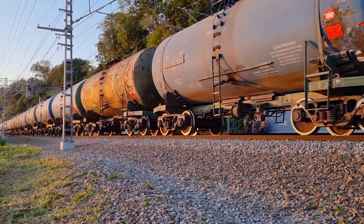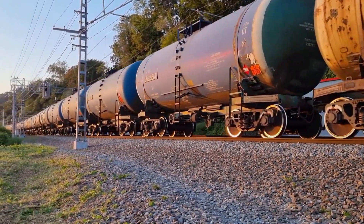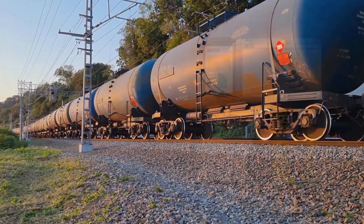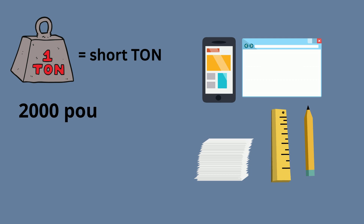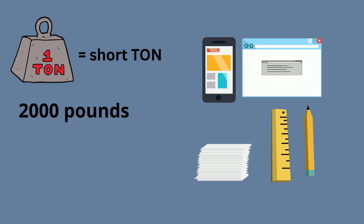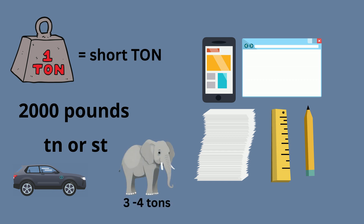Now, what do you do if you have something heavy like a car or a train? You could use what's called a short ton, which is equal to 2,000 pounds. It uses the abbreviation TN or ST. A small car weighs roughly one ton, and an adult female elephant weighs roughly three or four tons.